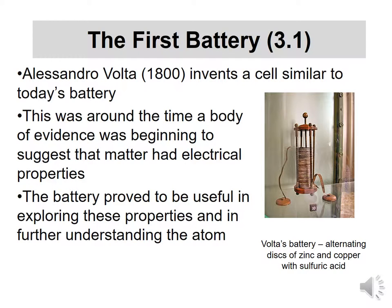The first battery was developed by Alessandro Volta back in about 1800 or so. He invented a cell very similar to today's batteries. If you look at the picture, you'll see just a stack of metal disks — alternating copper and zinc disks. Because of those dissimilar metals, they're actually able to generate a difference in electrical charge. Inside the cell is filled with sulfuric acid to help that charge go back and forth between the elements.